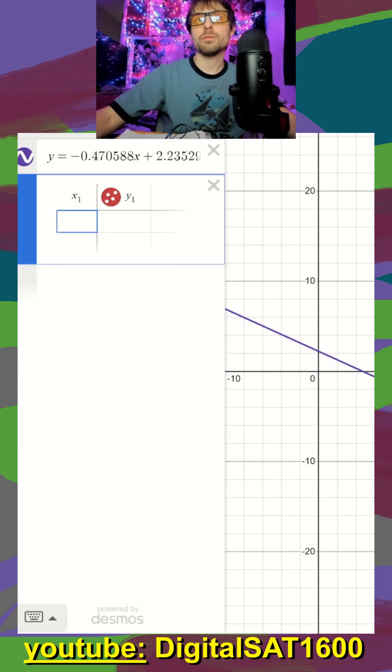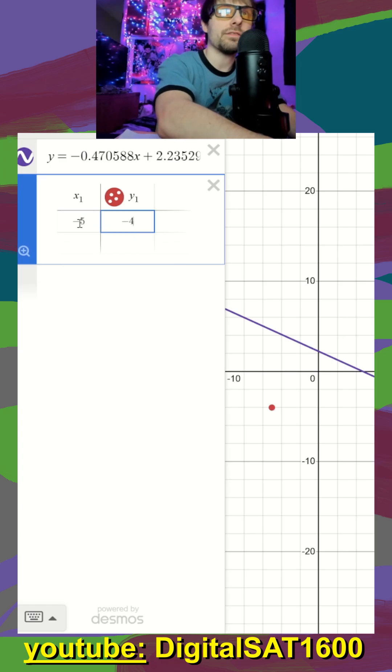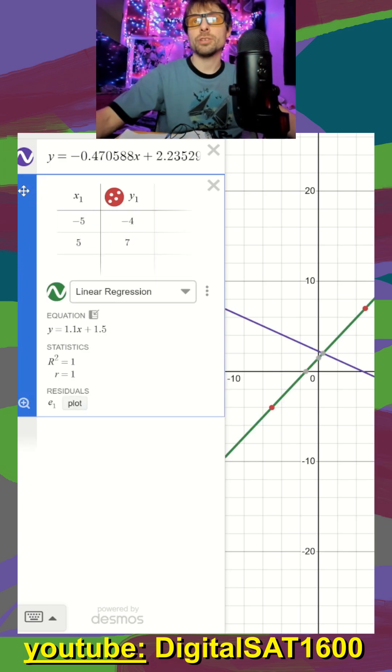We're going to add a second one for our second line here. This is going to be negative 5, negative 4 to positive 5 and 7. Same thing, I'm going to graph our second line. I'm going to export this and get rid of our table.